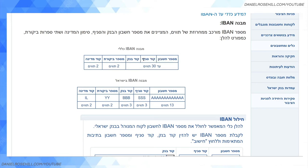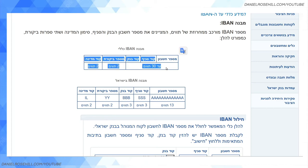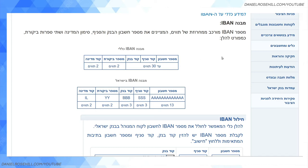Then you have the code SNEAF, which is a three-digit identifier for your branch of that bank. And mispar cheshpon is your account number. Putting all those details together — the country, the bank code, the branch code, and the account number — you get a unique identifier.